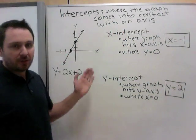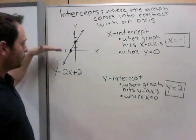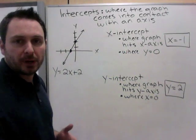And it's quick and easy when you have a graph. Just look at it. Y-intercept, where did it hit the y-axis? At a height of 2. X-intercept, where did it hit the x-axis? At x is negative 1. And now we can also do this algebraically.